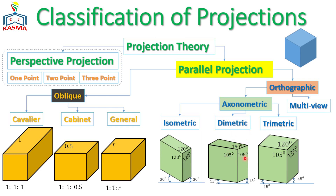In trimetric projection, all three angles are different — for example, 105, 135, and 120 degrees. Each axonometric type has its own advantage: isometric is used when important information appears on both the front and top views; diametric is preferred when the front and side views are most important; and trimetric when the front and top views carry more information than the side view. The choice depends on what the object requires.